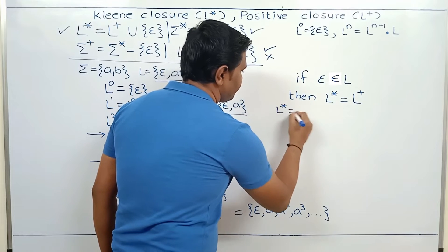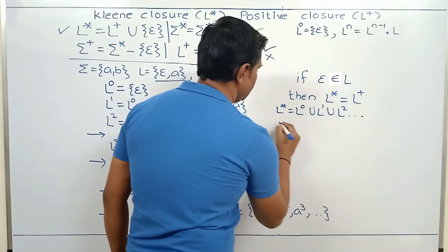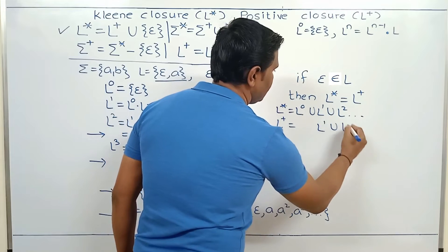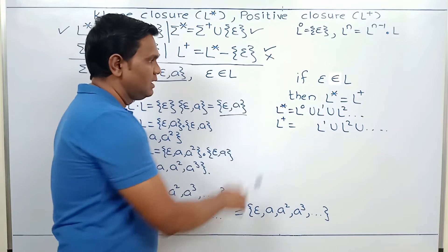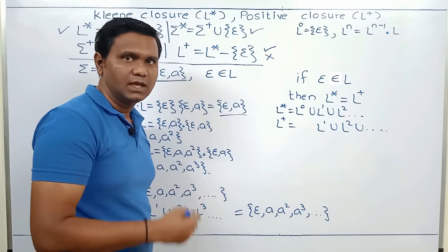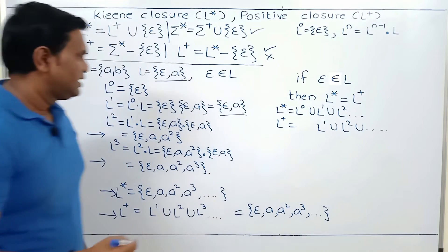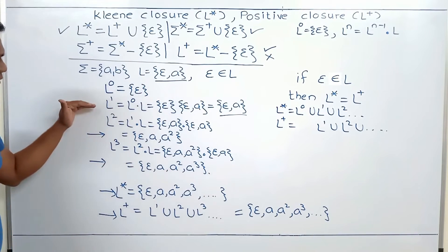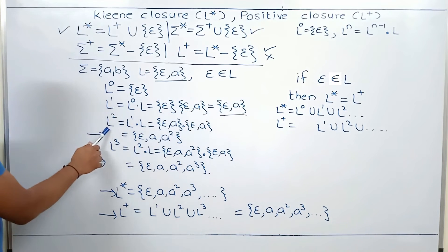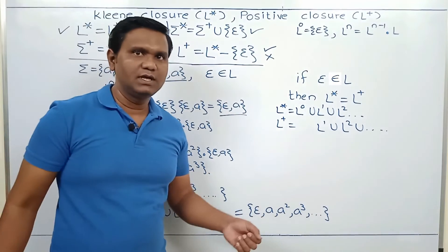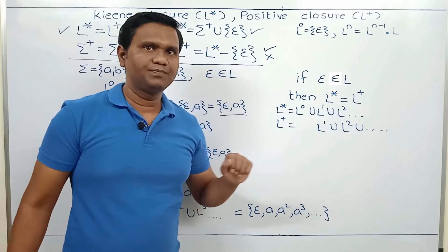L* is L^0 union L^1 union L^2 and so on. L+ is L^1 union L^2 and so on. The only difference between L+ and L* is that L* contains L^0, and L^0 contains epsilon. But if epsilon belongs to the language, then every power of L will contain epsilon — L^1 contains epsilon, L^2 contains epsilon — and that is why L+ also contains epsilon.